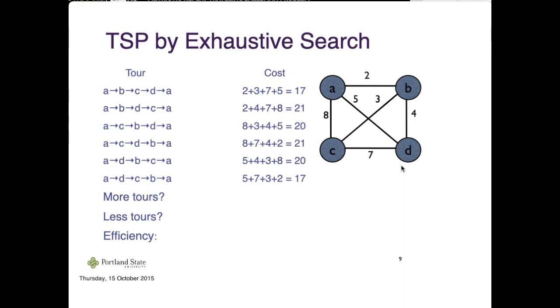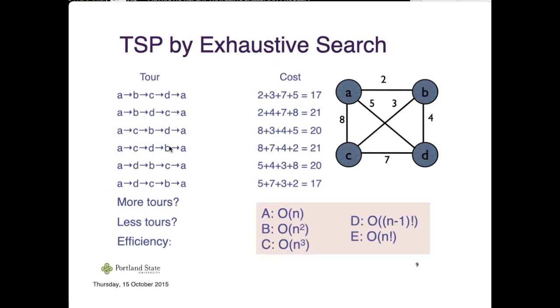In general, if you have an exhaustive search for this problem, you can get the optimal solution since you simply exhaust all possible candidate solutions. In this case, the optimal solution is 17 because 17 is the minimum cost.